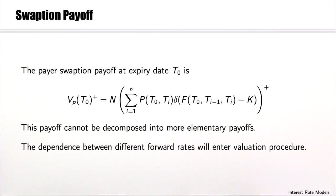Let us have a closer look at the payer swaption payoff at expiry date T0. The value of the payer swap is what is shown here without the plus sign. The holder will only exercise the option to enter the payer swap if this value is positive, hence the payer swaption payoff is the positive part of this value.